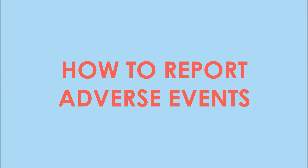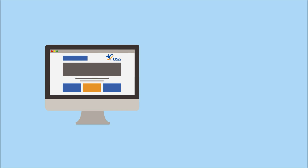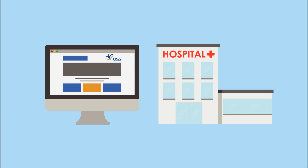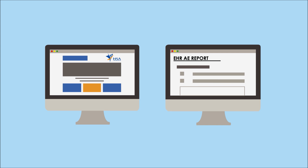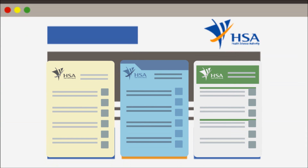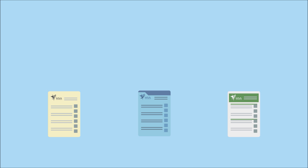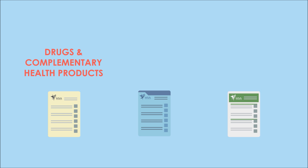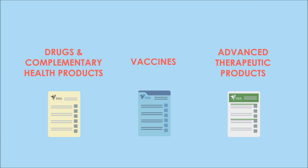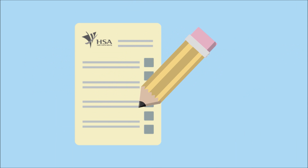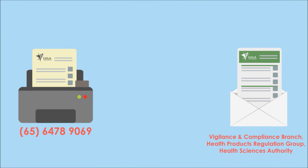You can submit AE reports to HSA through the online form on the HSA website, or if you are in the public healthcare sector, you can report through the electronic reporting system for allergies and AEs available in your institution. Alternatively, you can report using the ADR forms available on the HSA website. To facilitate reporting of different types of health products, the forms have been colour-coded. Use the yellow form for drugs and complementary health products, the blue form for vaccines, and the green form for advanced therapeutic products such as cell, tissue and gene therapy products. Once completed, submit it via fax, post or email.